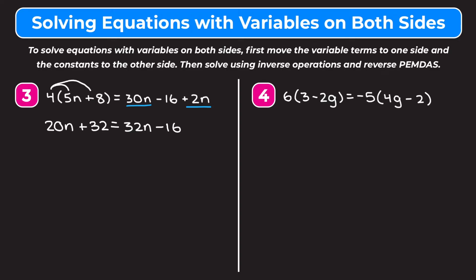Now we want to get the variable terms to one side and the constants to the other. I'm going to move the 20N from the left to the right by subtracting 20N from both sides. 20N minus 20N is 0, so I'm left with 32 on the left. On the right, 32N minus 20N is 12N, so I have 12N minus 16.